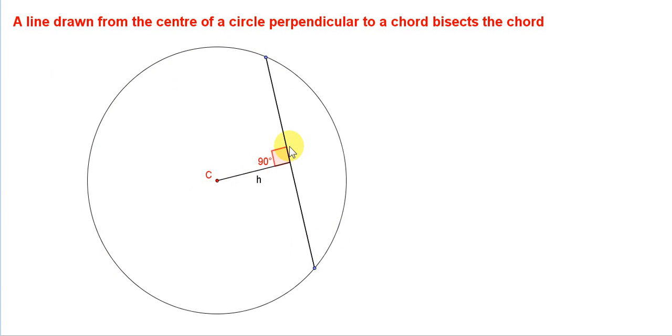You can see it's drawn perpendicular to the chord. Now, we are going to prove that this line H actually bisects this chord.